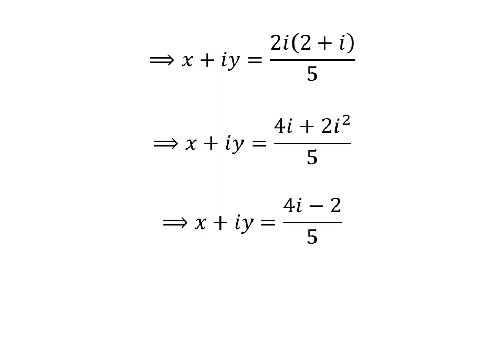Further simplification gives us x plus i times y is equal to 4i minus 2, upon 5. We can split the fraction into two. Thus, x plus i times y is equal to minus 2 upon 5 plus 4i upon 5.